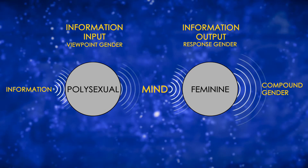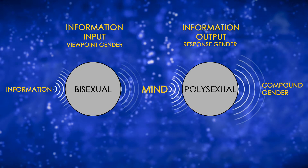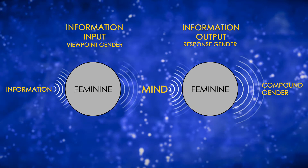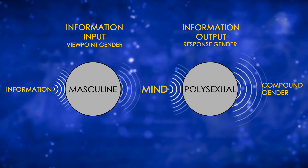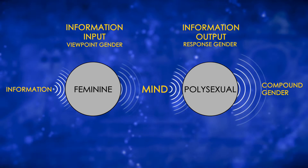This information then goes to mind, where we become aware of it. In stage two, we develop a response. Once again, one of the four operating systems will default to assist us. Since one of the four gendered systems will default to give us a viewpoint, and one of the four will default to process our response, we can inherit any one of 16 different default combinations.